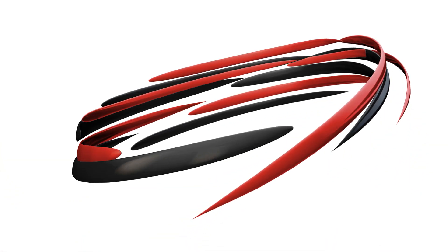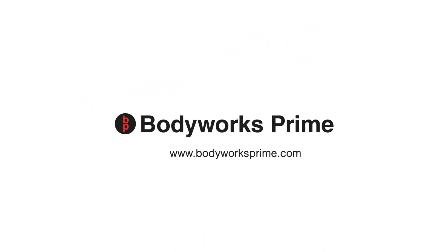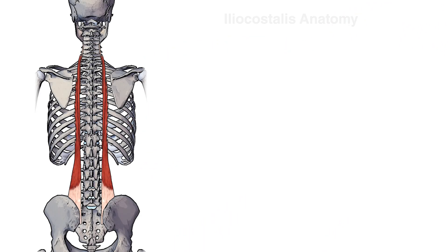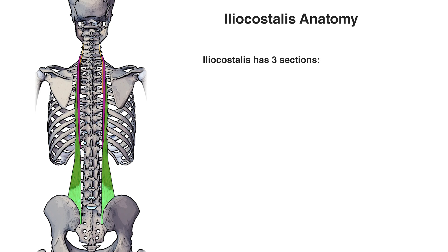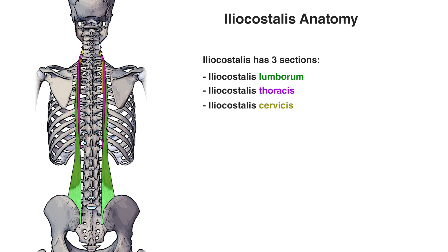Hi everyone, welcome to Bodyworks Prime. Today we're going over the origin, the insertion and the action of the iliocostalis muscle. Pictured here you can see the iliocostalis muscle, and this muscle is comprised of three different sections. I've color-coded these different sections so that we can better understand where they're located. This green section is the iliocostalis lumborum, this purple section is the iliocostalis thoracis, and this yellow section is the iliocostalis cervicis.